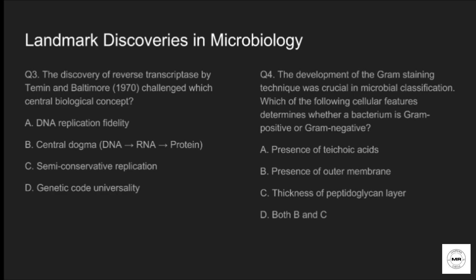Question three: the landmark discovery of reverse transcriptase by Temin and Baltimore in 1970 challenged which central biological concept? Option A: DNA replication fidelity. Option B: the central dogma — that information is transferred from DNA to RNA and then proteins are synthesized. Option C: semi-conservative replication. Option D: genetic code universality. The correct answer is option B.